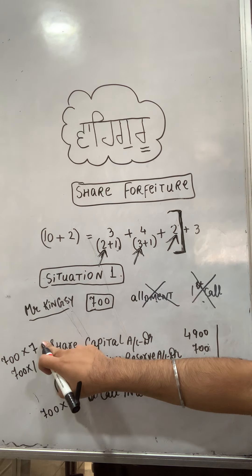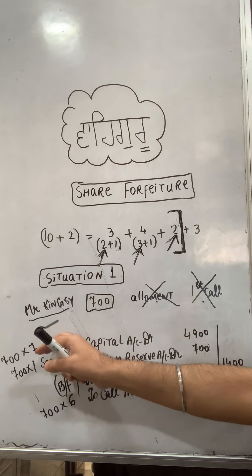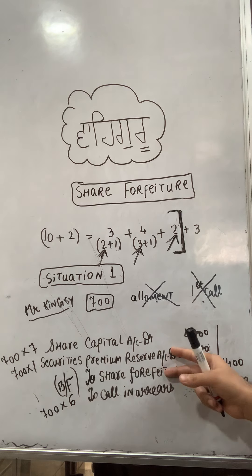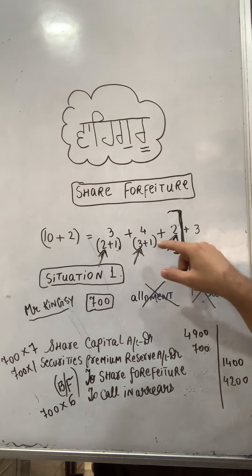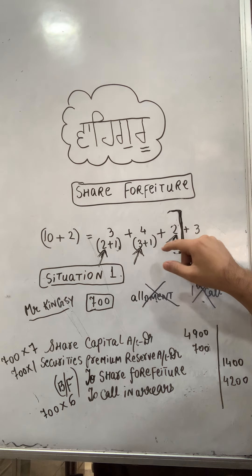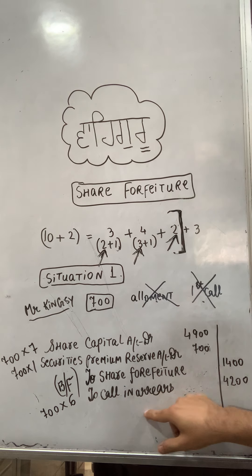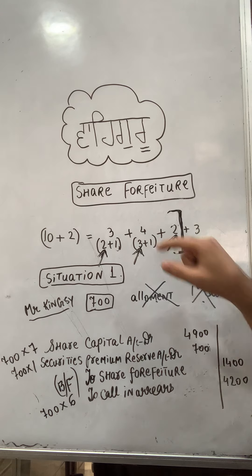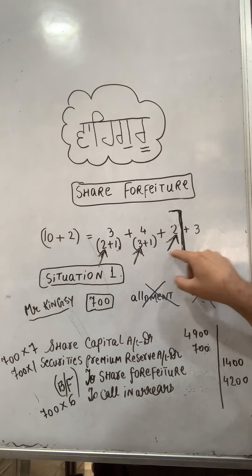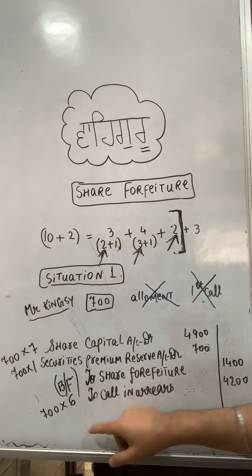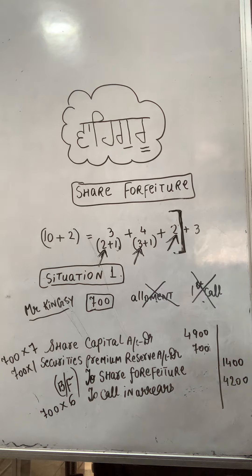To summarize: 700 into 7 gives the share capital figure. When we forfeit, share capital is debited and security premium reserve is debited for the unpaid SPR — in this case the allotment SPR of 700 into 1. Call in Arrears for the unpaid amounts is 700 into 6. Share Forfeiture is the balancing figure. Situation 1 is now complete.